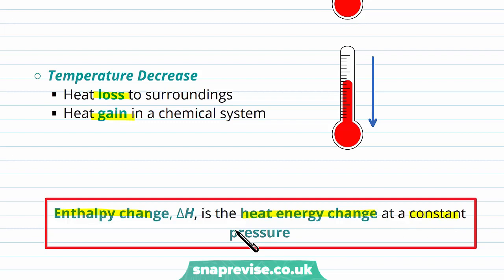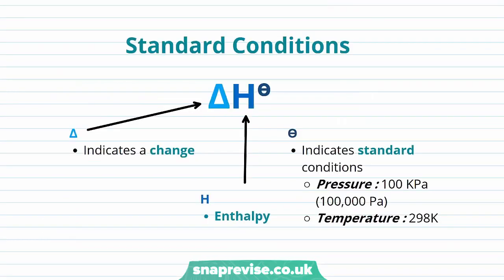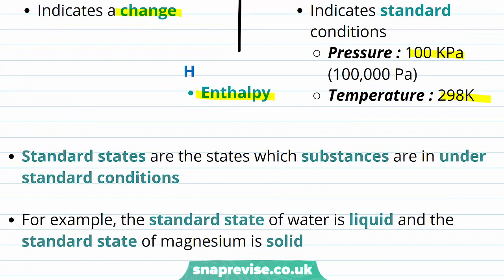Before we look at system and surroundings, let's look at the conditions under which enthalpy is measured. Enthalpy is measured under standard conditions — conditions you'll need to know and remember. We have delta H with the plimsoll sign: delta indicates a change, capital H represents enthalpy, and the plimsoll sign indicates standard conditions, which are 100 kilopascals and a temperature of 298 Kelvin. Standard states are the states substances are in under standard conditions — for example, water is a liquid and magnesium is solid.